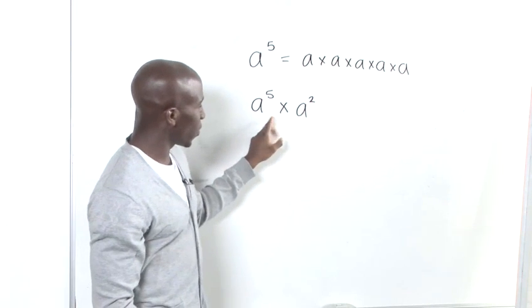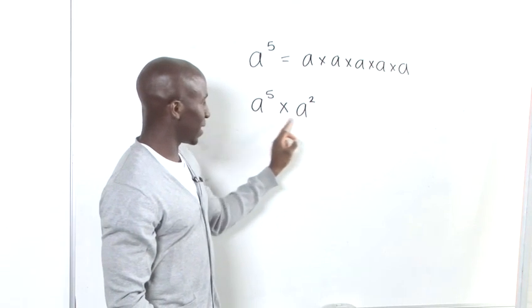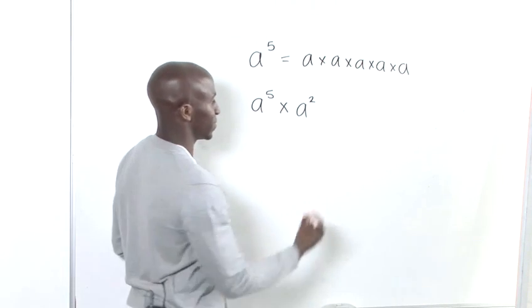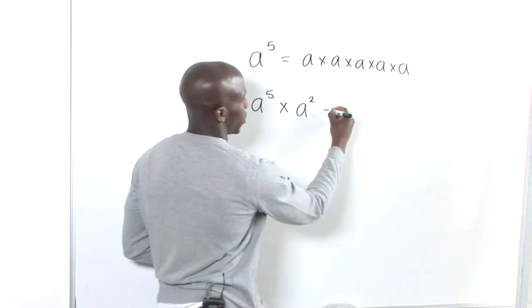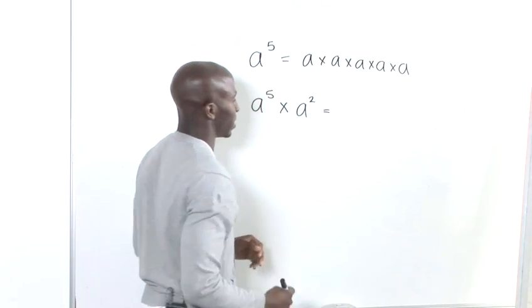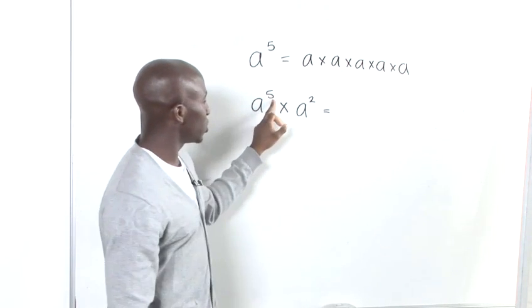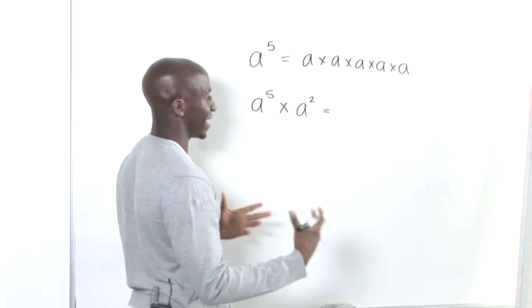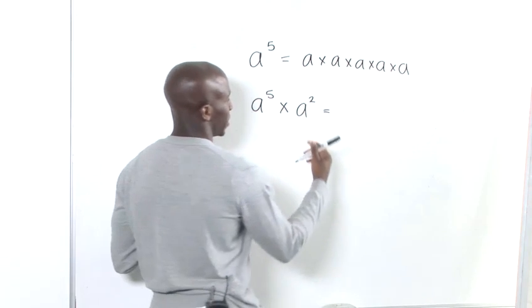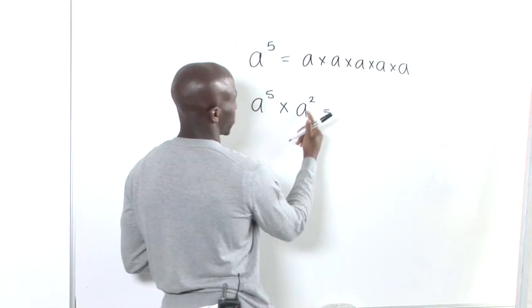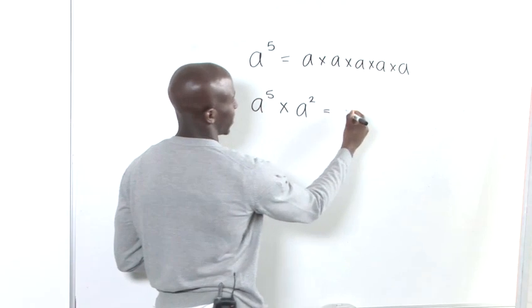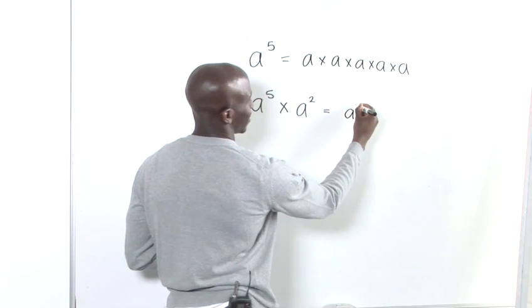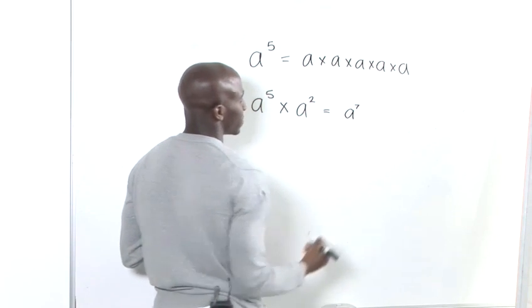When we multiply exponents like this, you need to remember that you add the powers. So a² times a⁵ is basically a to the 7.